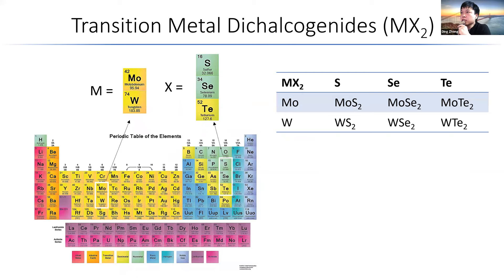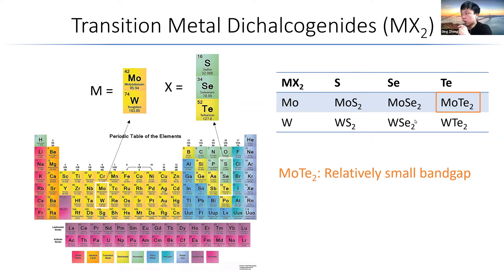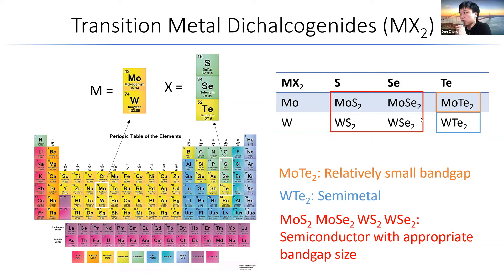A great candidate for valleytronics is transition metal dichalcogenides, usually denoted as MX₂, where M stands for molybdenum or tungsten, and X stands for sulfur, selenium, or tellurium. With these combinations we get six materials, among which MoTe₂ has a relatively small band gap and WTe₂ is a semi-metal. So mostly we're interested in the remaining four materials, which are semiconductors with appropriate band gap sizes and very similar properties.